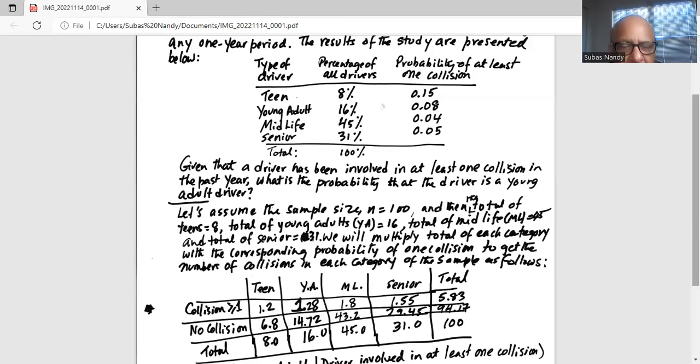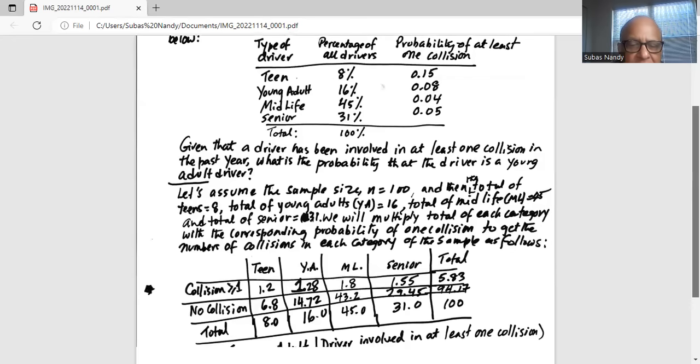And no collision is the rest, which is 94.17. And we add up the sum of the two rows, we get 100, we add up the sum of the columns, we get 100. So 100 is your total sample size.